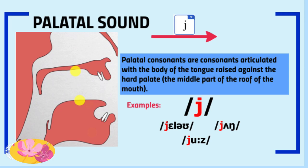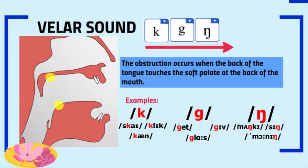Palatal sounds: palatal consonants are articulated with the body of the tongue raised against the hard palate, the middle part or the roof of the mouth. The J sound is a pure palatal sound. Velar sounds: the obstruction occurs when the back of the tongue touches the soft palate at the back of the mouth. K, G, and the NG sound — as in 'sing' or 'monkey' — give you velar sounds.